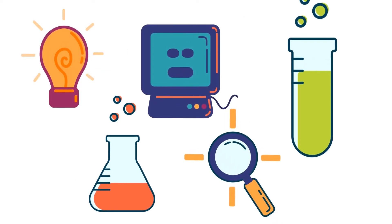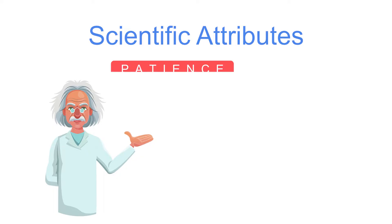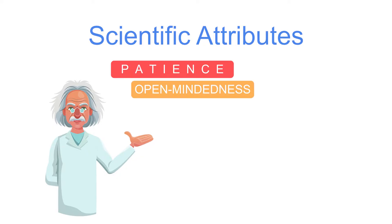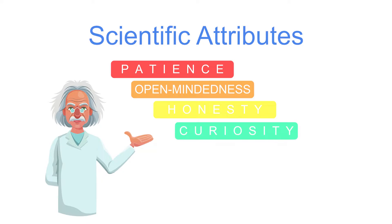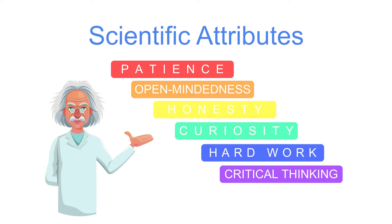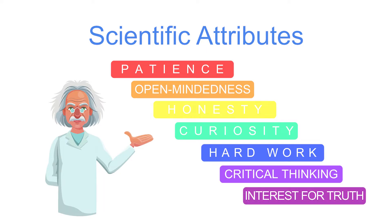In doing science, a scientist must possess scientific attributes which include patience, open-mindedness, honesty, curiosity, hard work, critical thinking, and a long-lasting interest to search for truth.